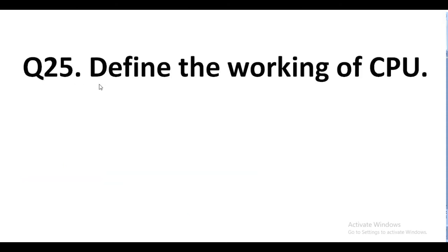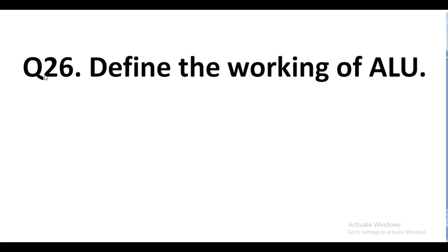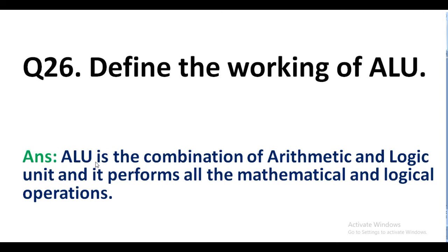Question number 25. Define the working of CPU. Answer. CPU is called the brain of the computer and the primary work of CPU is to convert data from input, to process the data and give results accordingly. Question number 26. Define the working of ALU. Answer. ALU is the combination of arithmetic and logic unit and it performs all the mathematical and logical operations.